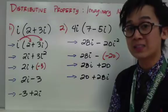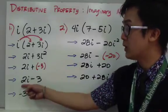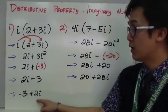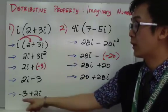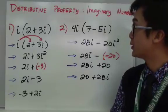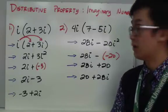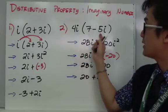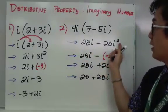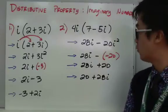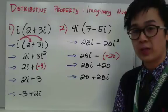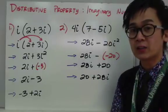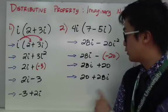2i minus 3 is a complex number in simplest form, but it's not in standard form. The real part must come first, so the final answer is negative 3 plus 2i. For example 2, we have 4i times the quantity 7 minus 5i. Distributing 4i gives 28i plus 4i times negative 5i, which is negative 20i squared. Substituting i squared equals negative 1, we get 28i plus 20, so the final answer in standard form is 20 plus 28i.